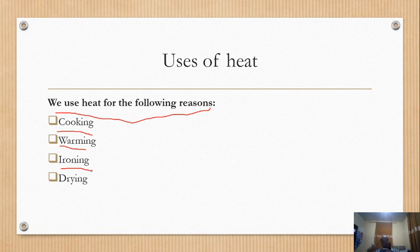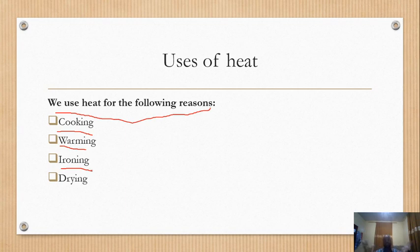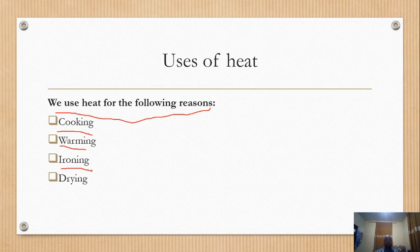The iron uses heat — from electricity, and sometimes fire. There are traditional old irons that use charcoal. Number four — drying: to dry our clothes. You put them outside and expose them to the sun, and the sun's heat makes them dry. So we use heat for cooking, warming, ironing, and drying.